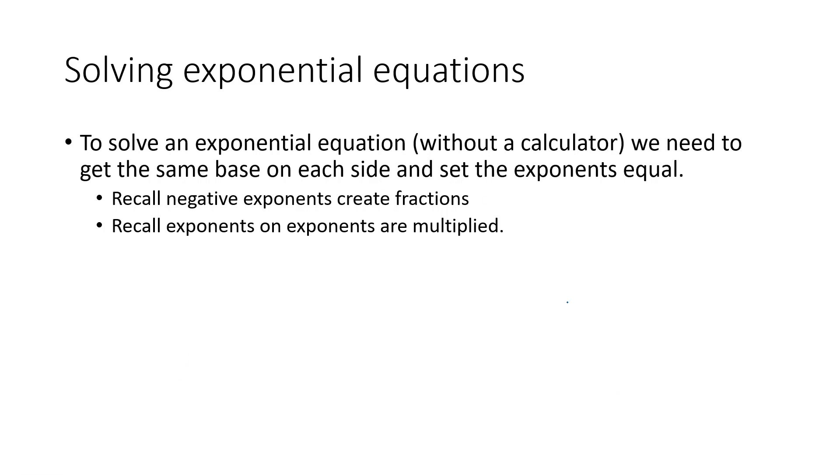We had a couple tricks that helped us. First, negative exponents created fractions. So if we had 1/2, that would be equal to 2 to the negative 1. Negative exponents create fractions. We also know that exponents on exponents are multiplied. So if I have 3 squared and that's all raised to the fifth power, we can multiply those exponents and we have 3 to the tenth power.